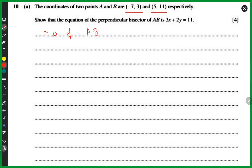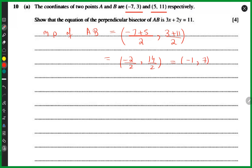First, let's find out the midpoint of AB so I have a point on the perpendicular bisector. For the midpoint, it's (x1 + x2)/2 and (y1 + y2)/2, so that's (-7 + 5)/2 and (3 + 11)/2, giving us -2/2 and 14/2. The midpoint of AB is (-1, 7).